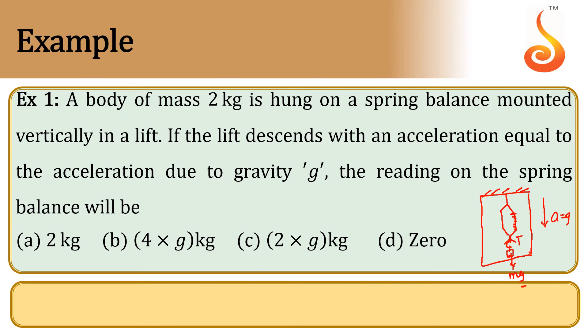Downward force is greater than upward force. So, mg minus tension is equal to ma.